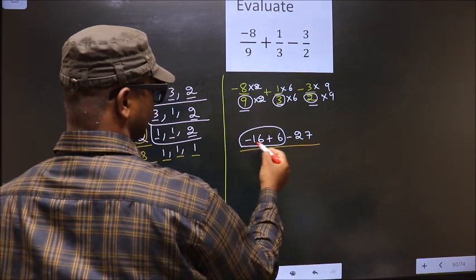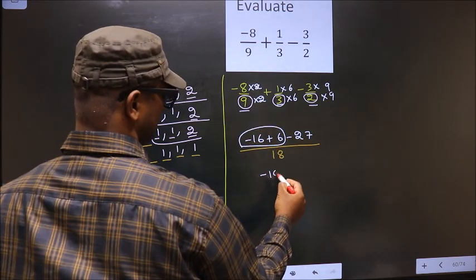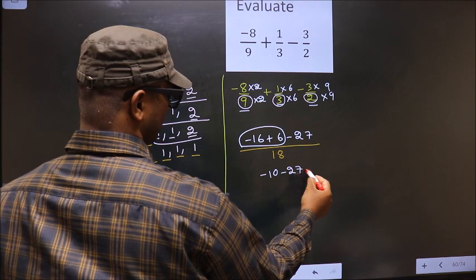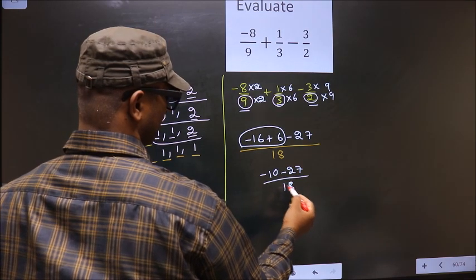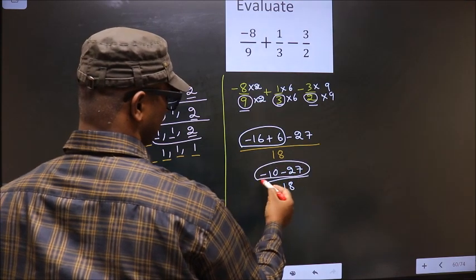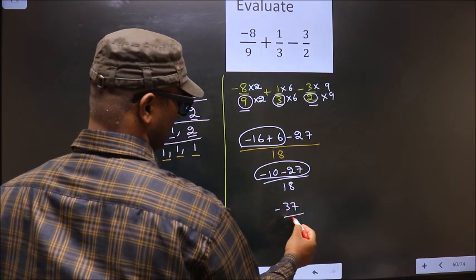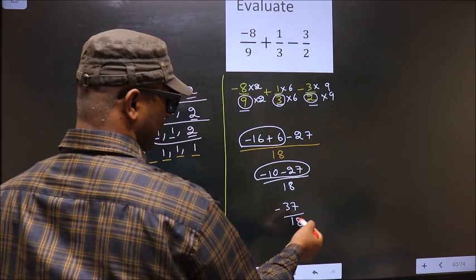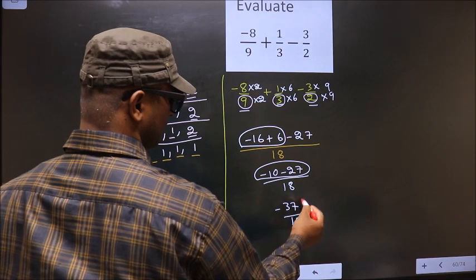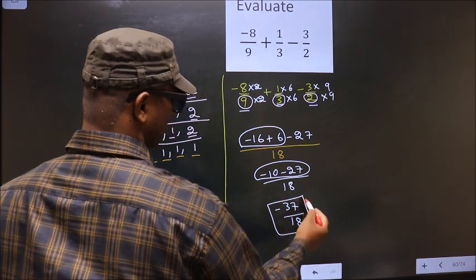Now minus 16 plus 6 is minus 10. Minus 27 by 18. Minus 10 minus 27 is minus 37 by 18. We cannot simplify this fraction. So this is our answer.